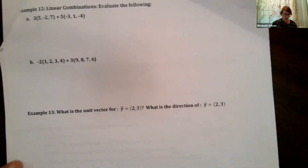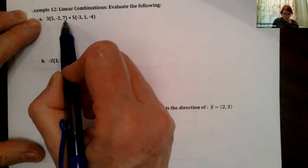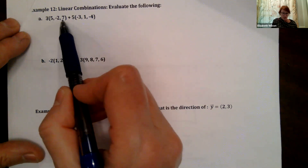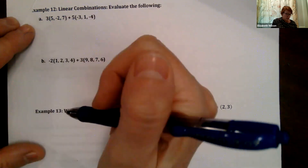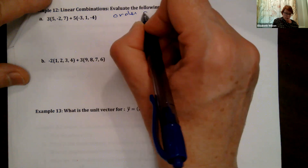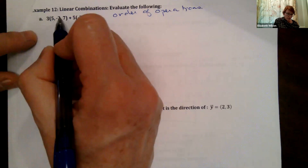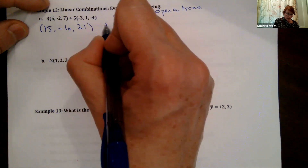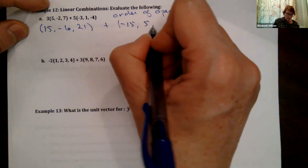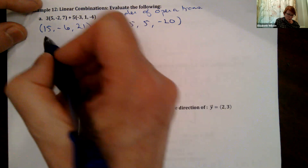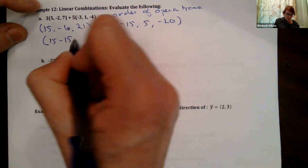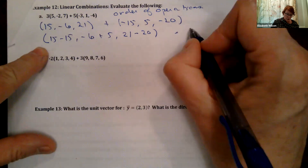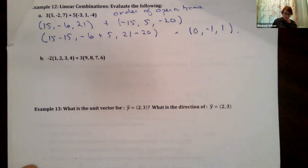In example 12, we compute 3 times the vector 5, minus 2, 7 plus 5 times the vector minus 3, 1, minus 4. First multiply: 3 times gives 15, minus 6, 21. Then 5 times gives minus 15, 5, minus 20. Adding corresponding components: 15 plus minus 15 is 0, minus 6 plus 5 is minus 1, and 21 plus minus 20 is 1. The result is 0, minus 1, 1.